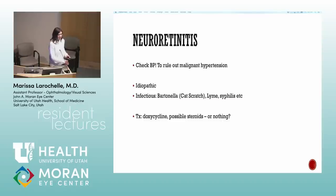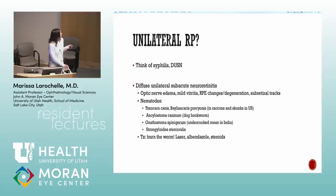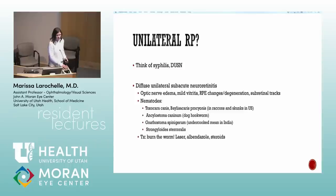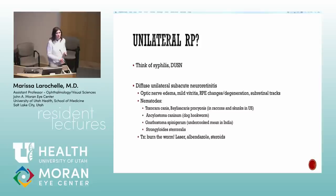Bonus: if you think you're seeing unilateral RP, consider other diagnoses first — old syphilis, old CMV retinitis with granular inactive changes, and DUSN (diffuse unilateral subacute neuroretinitis), which is literally a worm crawling around the retina. In North America, the raccoon roundworm (Baylisascaris) is the most common cause.